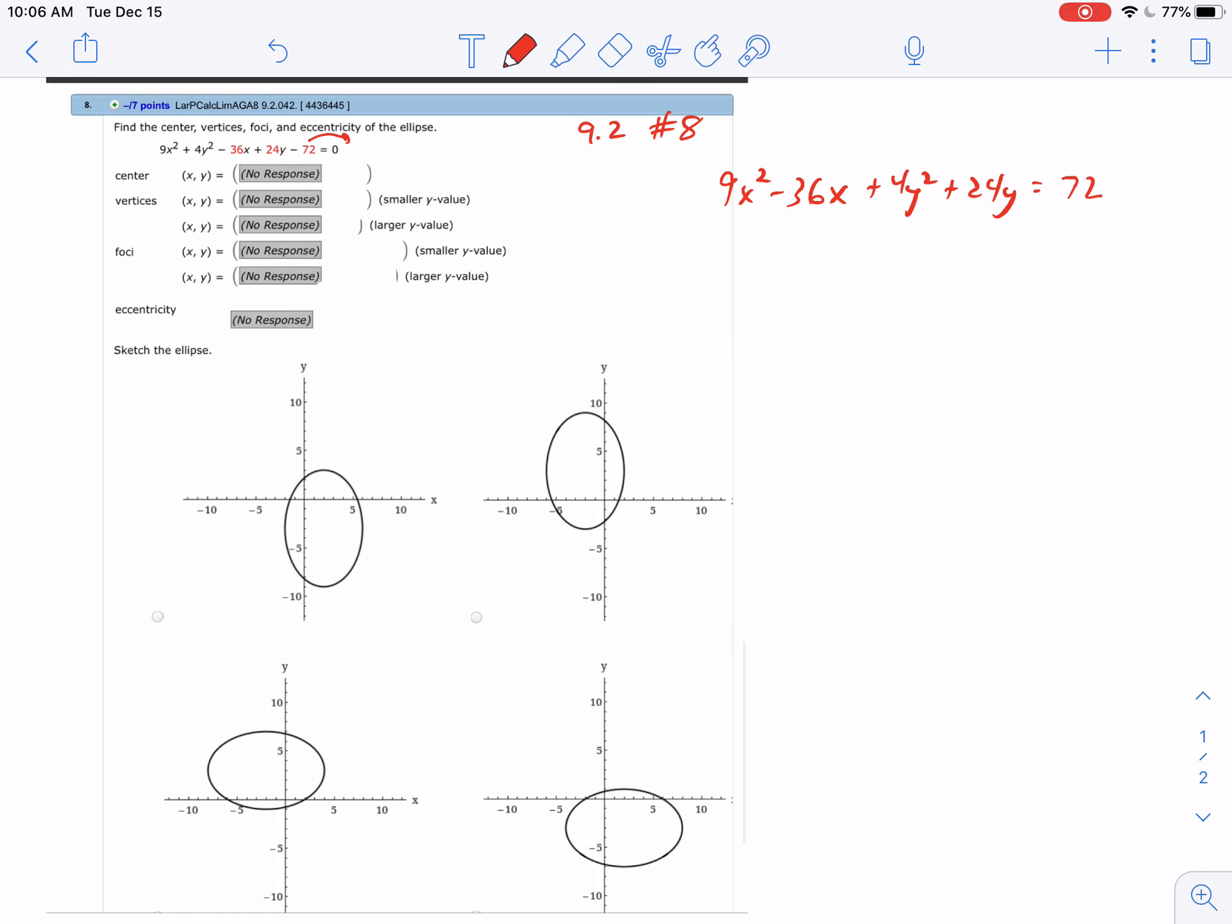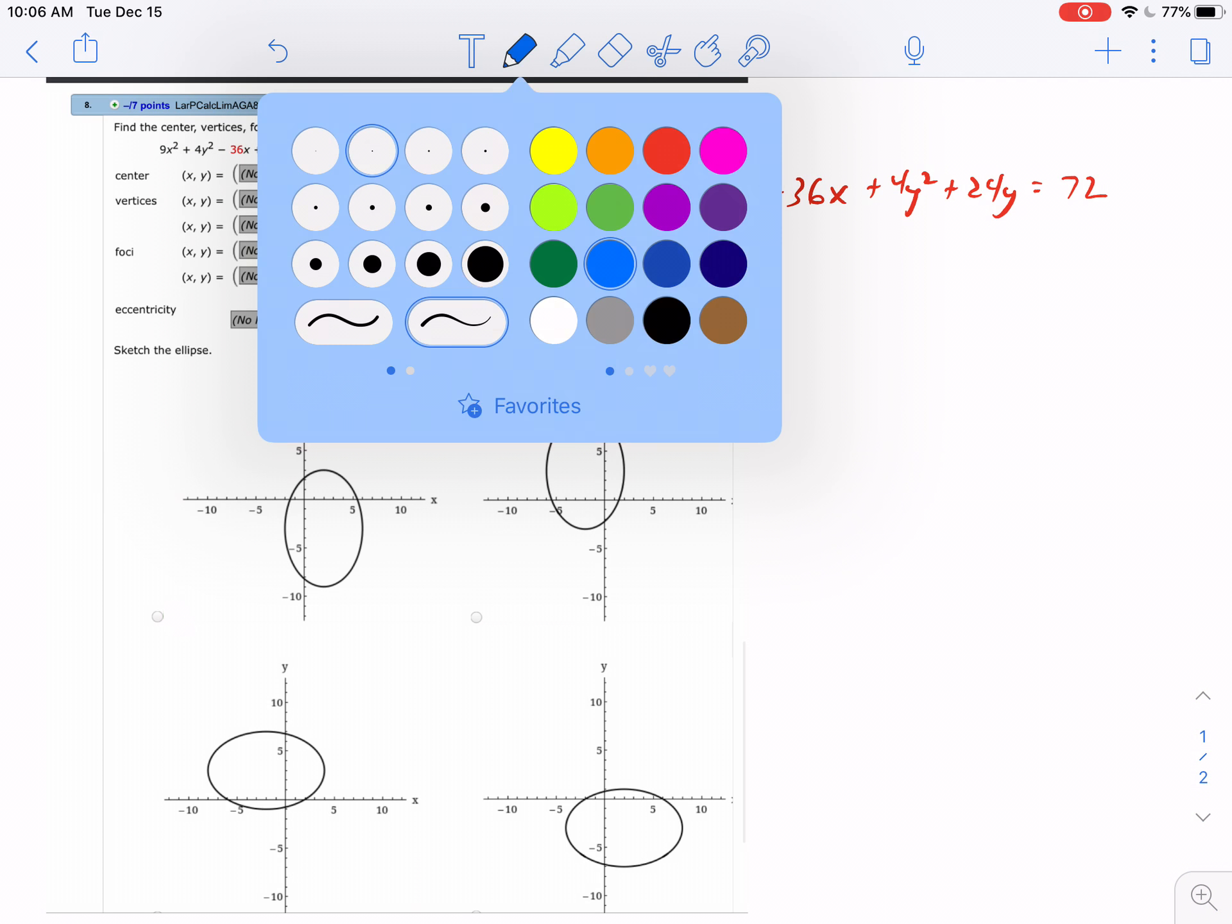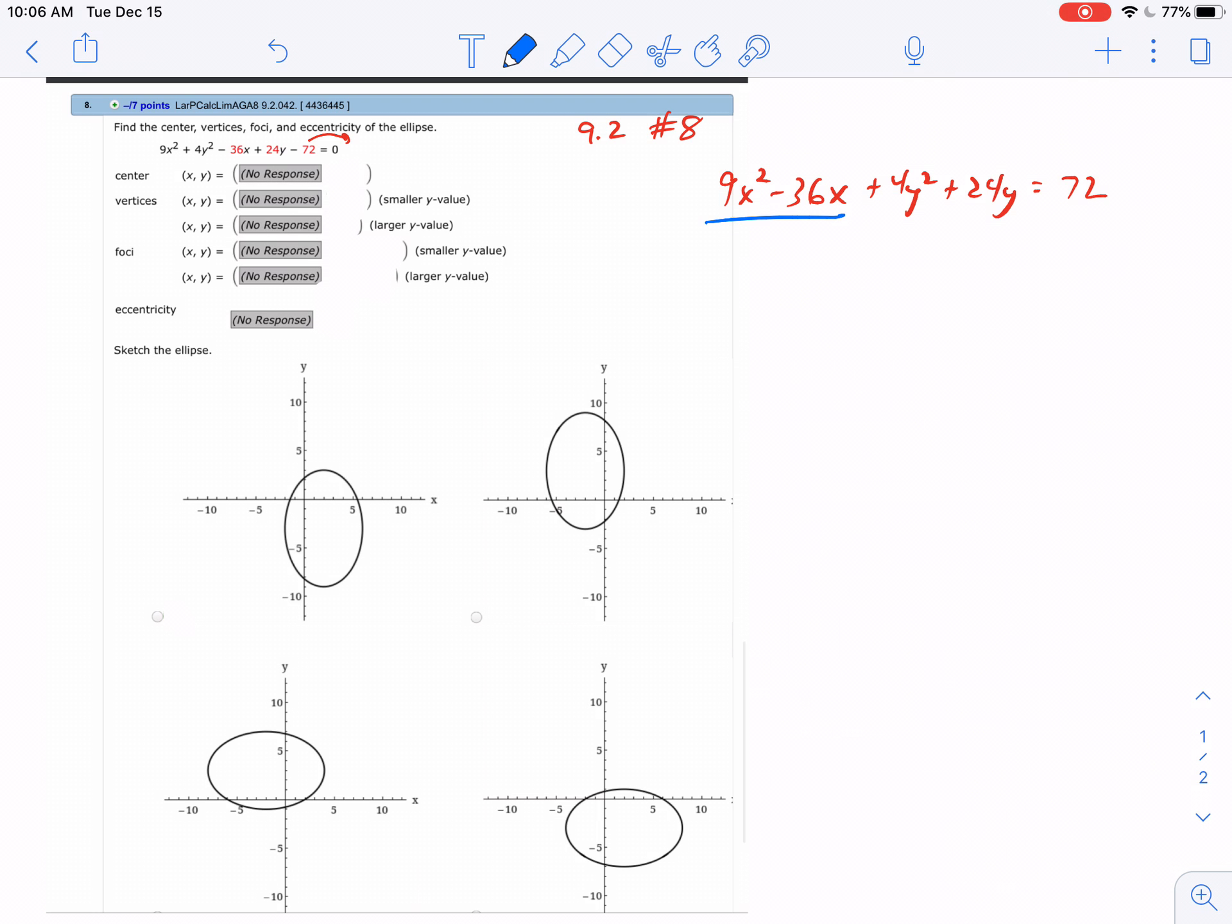With the x terms, we want to factor the 9 out, so that's x squared, and negative 36 divided by 9 is negative 4x, then we'll add a new number there.